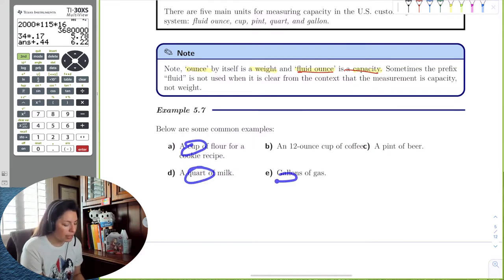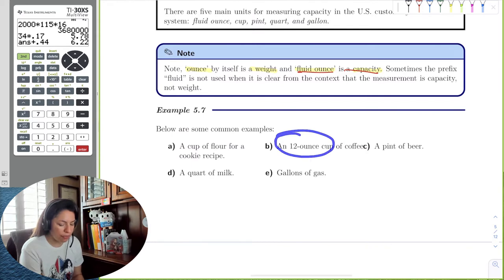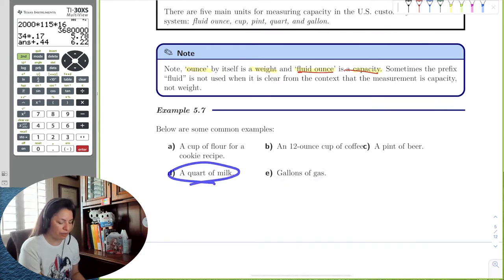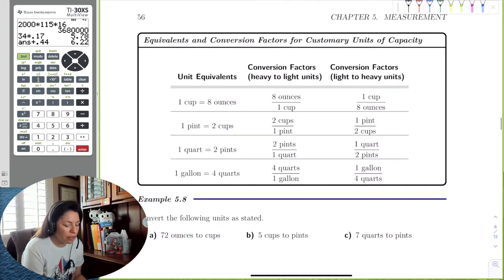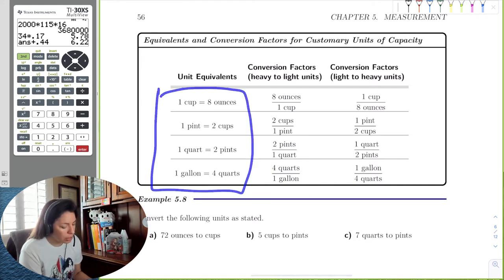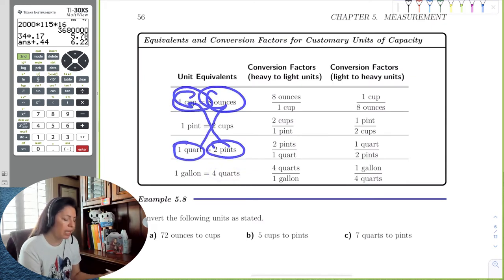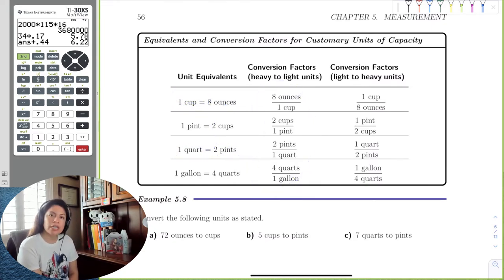Common examples include a cup of flour for a cookie recipe, a 12-ounce cup of coffee, a pint of beer, a gallon of gas, and a quart of milk. Because there are more units for capacity, we have more unit equivalents and more conversion factors: cup to ounces, pint to cups, quart to pints, gallon to quarts — and we can chain these together as needed.